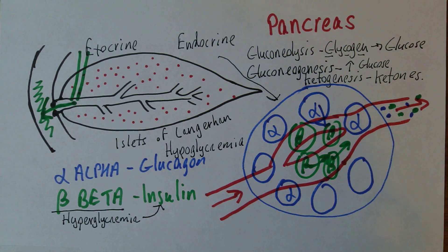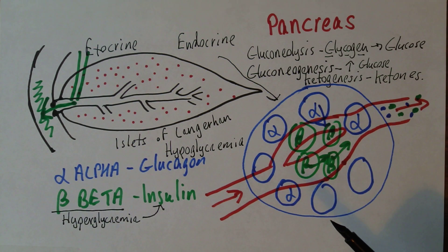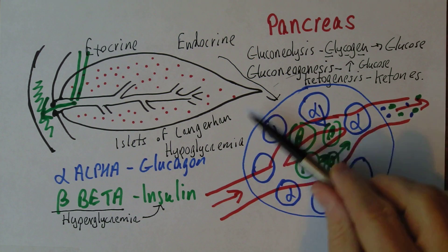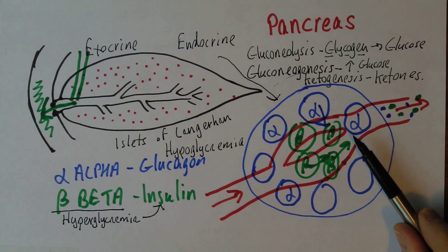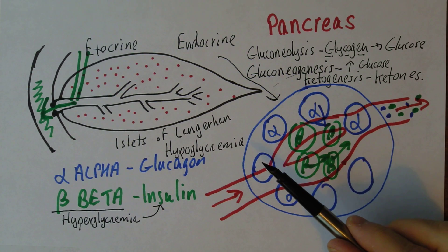Now quite why—what is quite what the advantage is of having the pancreatic islets, this endocrine tissue, this vital endocrine tissue in the pancreas, I'm not too sure about. You know, you might think that it would be the liver, for example, that would produce the glucagon and the insulin.